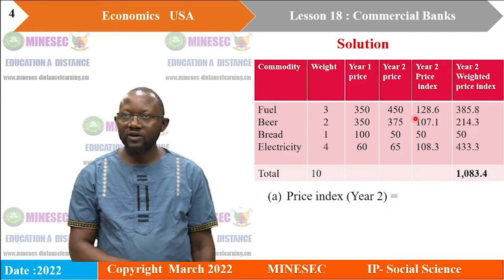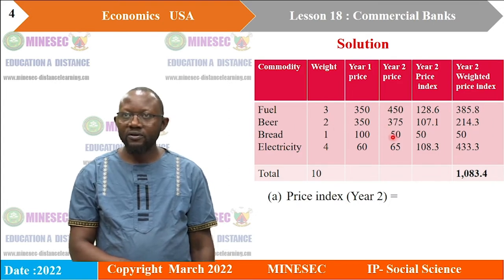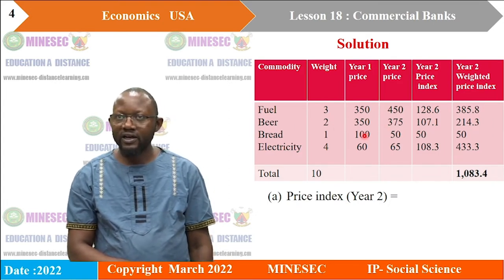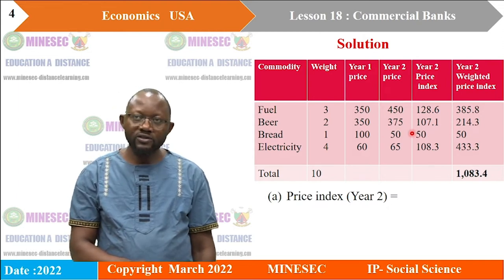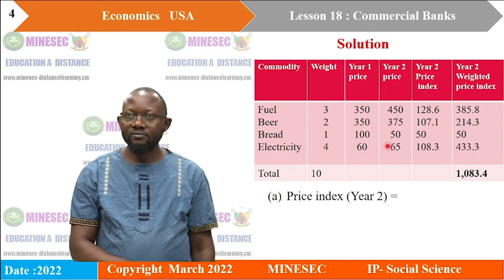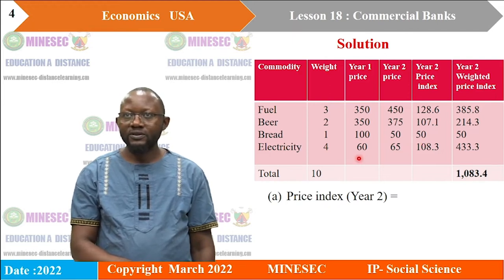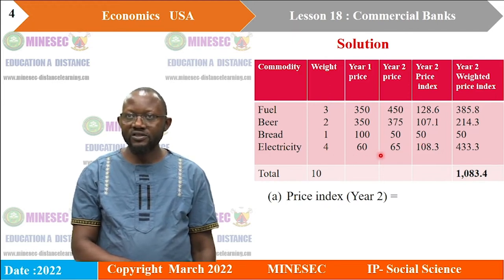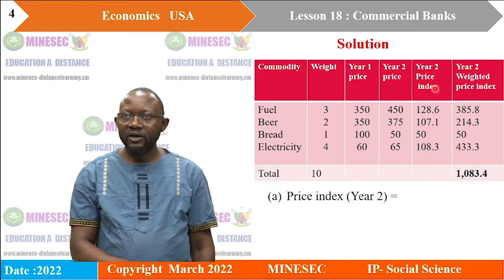We do the same for Beer: 375 divided by 350, times 100, gives us 107.1. For Bread: 450 divided by 100, times 100, gives us 50. For Electricity: 65 divided by 60, times 100, gives us 108.3.